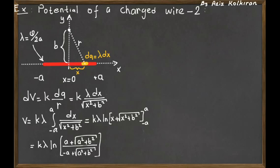The final result is the potential at any point on the y-axis a distance b away from the center of the rod is k times lambda times the natural logarithm of quantity a plus square root of a squared plus b squared divided by quantity minus a plus square root of a squared plus b squared.